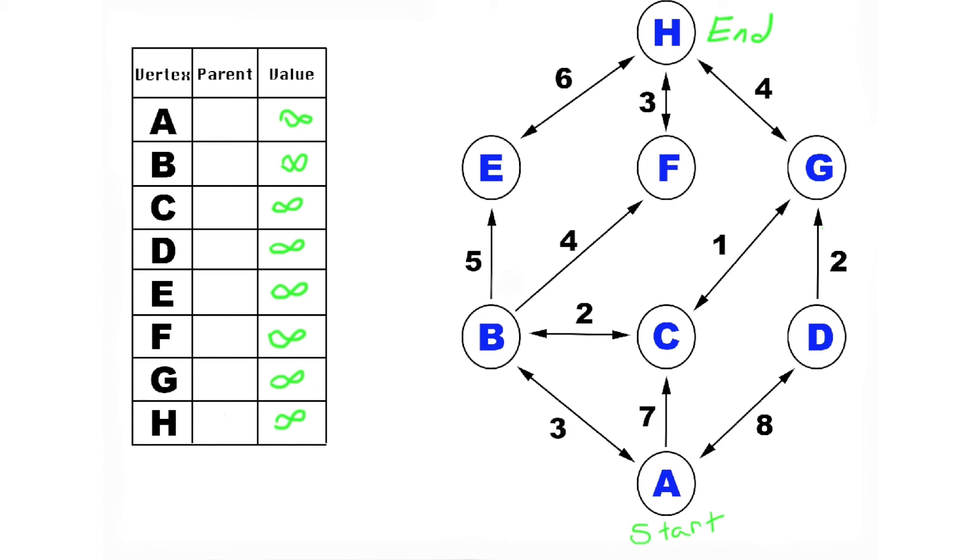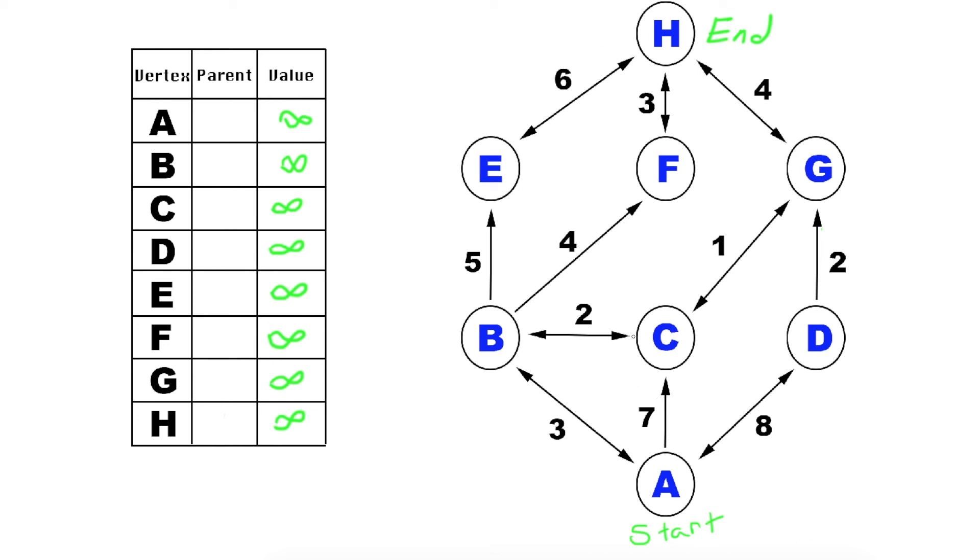So let's look at an example and see how easy this really is. Let's start down here at A and work our way up to H through the graph, hitting all the vertices to find the smallest distance. We're going to record everything over here to the left in this grid. It has three columns: vertex, parent, and value.